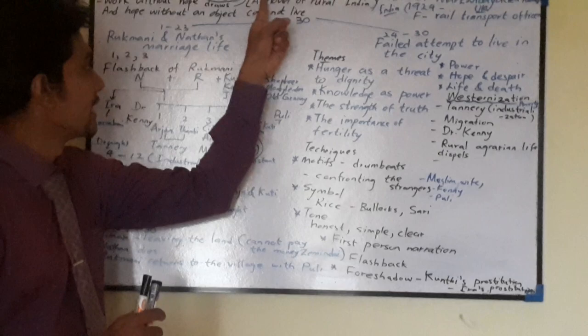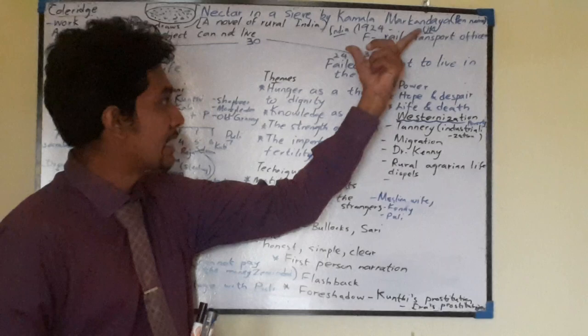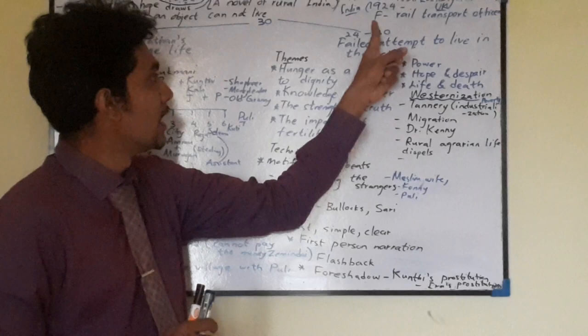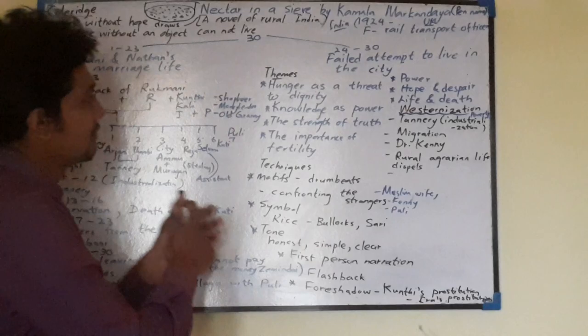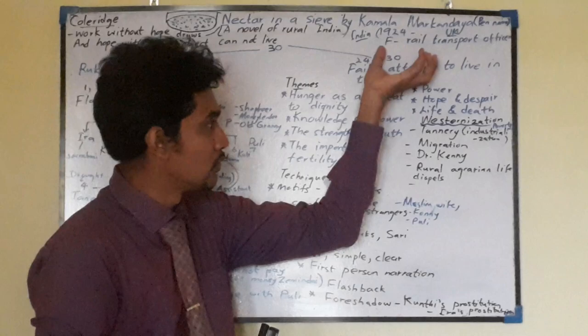Hi everyone, today we are going to learn another lesson on Nectar in the Sea by Kamala Markandaya. Kamala Markandaya was born in India and she has shifted to UK, so she has a bicultural identity. She was born in 1924. Her father was a rail transport officer, so most of her novels carry the theme of travelling and migration. Kamala Markandaya uses a pen name for her writing also.